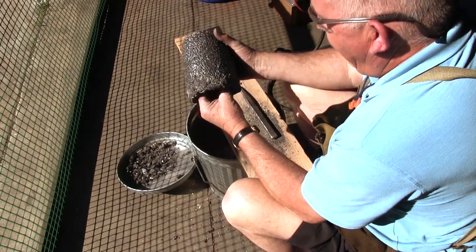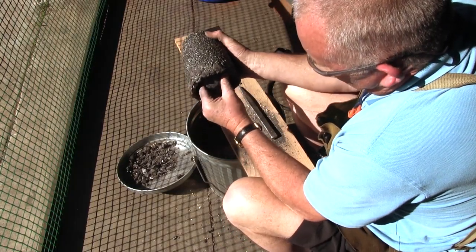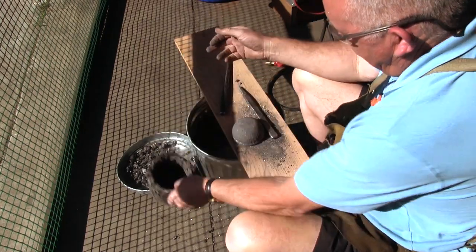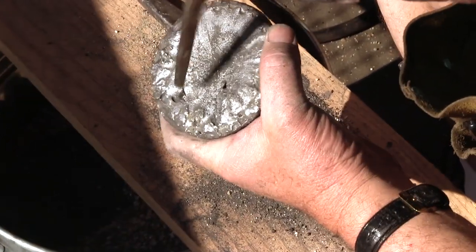If the crucible is cooled down too fast, the resulting ingot may contain a shrinkage cavity and trapped bubbles inside of it. We are hoping for a completely solid surface on the top.